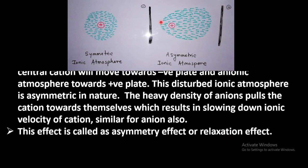What does relaxation effect mean? If we remove the electric field, the asymmetric ionic atmosphere will again transform back into a symmetric structure, and this transformation requires time — called the relaxation time. Regaining or reforming the symmetric ionic atmosphere from the asymmetric ionic atmosphere is called relaxation, and this effect is called the relaxation effect. Because of the asymmetric or relaxation effect, the ionic mobility decreases, and therefore the equivalent conductance of a strong electrolyte decreases with increase in concentration.